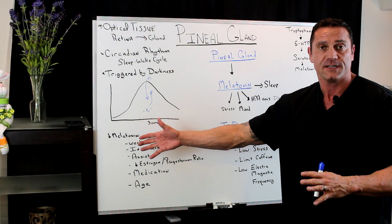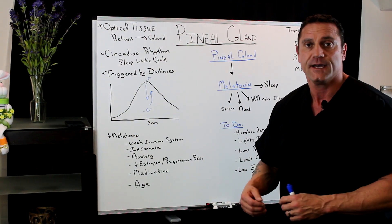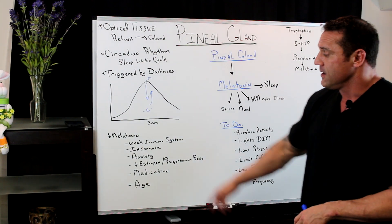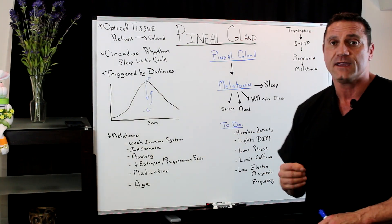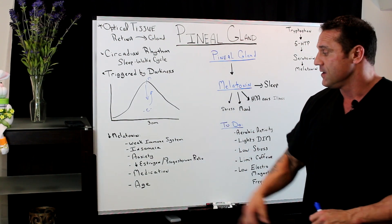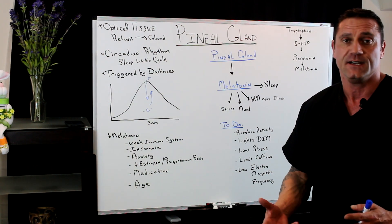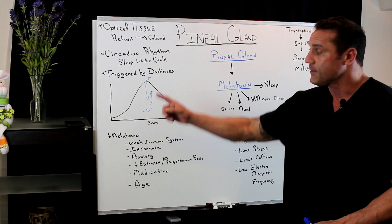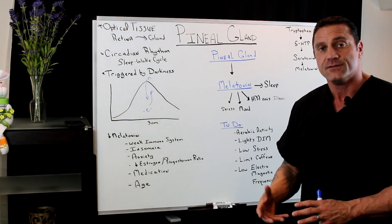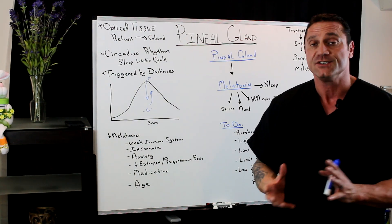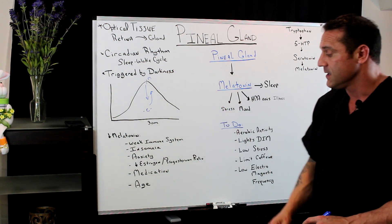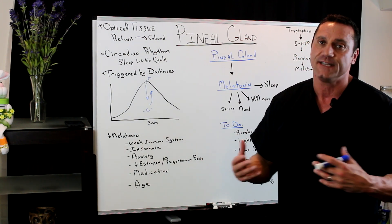Other things that lower your melatonin production include poor digestion, IBS, irritable bowel, malabsorption syndrome, leaky gut, and fatty liver. A weak immune system will also decrease melatonin production through the serotonin cascade. Insomnia itself, anxiety — which ties in with cortisol — decreased estrogen and progesterone ratio leading to estrogen dominance, medications, and age all reduce melatonin. As we get older, we naturally decrease melatonin production.